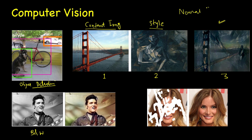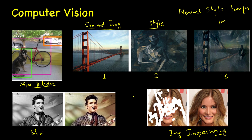Another application is image inpainting. This has many useful applications — for example, if you have an image where some part is occluded by an unwanted object and you want to remove it, you can feed the masked image to the network and it generates the missing part based on the surrounding content. Here you can see that many parts of a person's face are missing and have been filled in using deep learning.